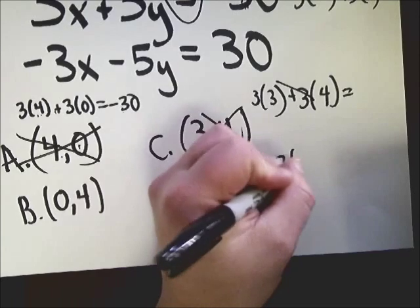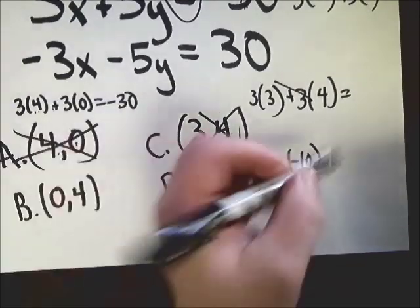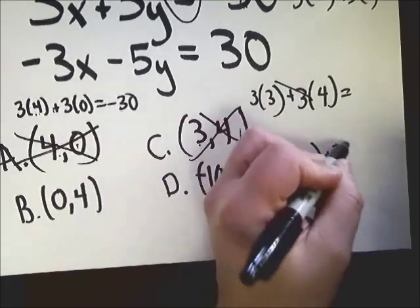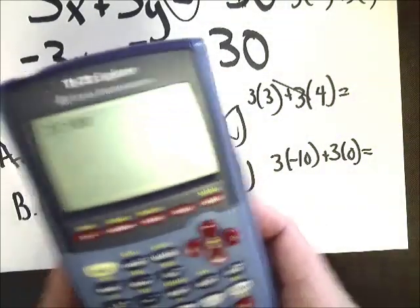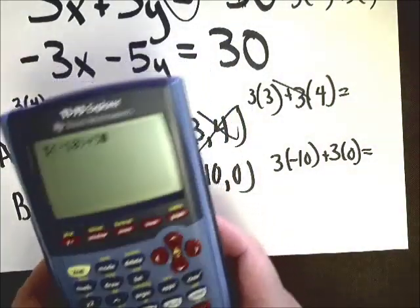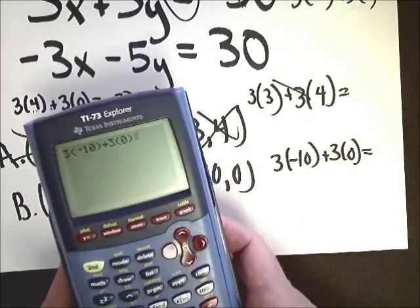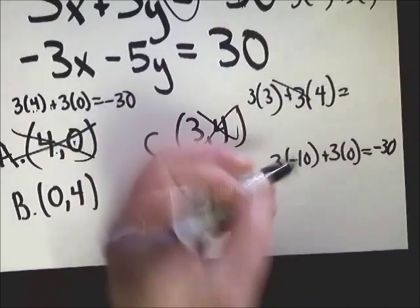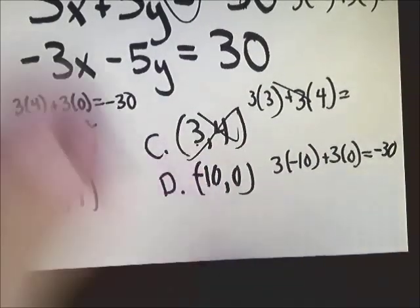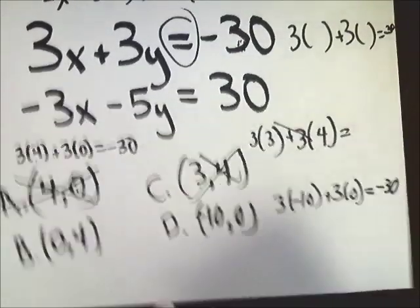I'm going to go to D because I'm right on top of it. 3 times negative 10 plus 3 times 0. So 3 parenthesis negative 10 plus 3 parenthesis 0 equals negative 30. Well, that's what it says right here. So this looks like a possible answer.